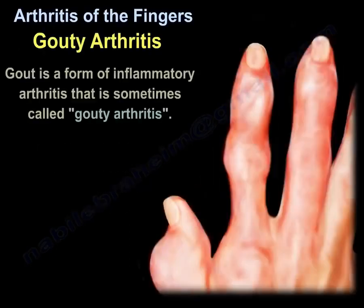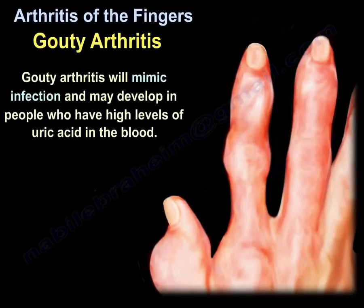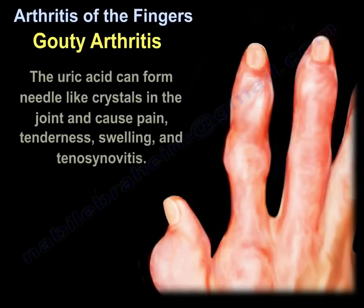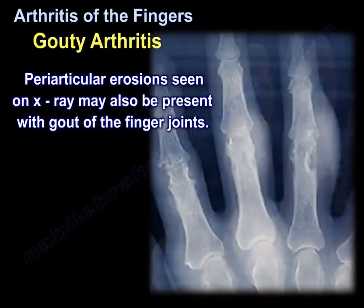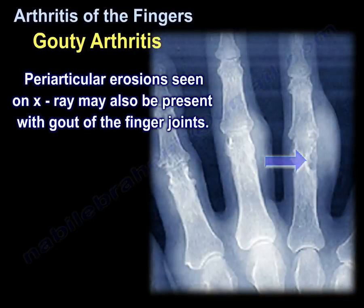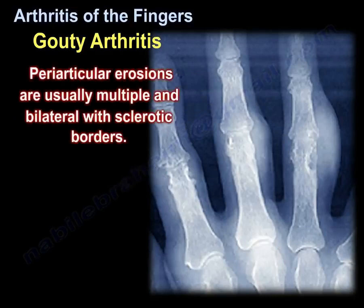Gouty arthritis: gout is a form of inflammatory arthritis that will mimic infection and may develop in people who have high levels of uric acid in the blood. The uric acid can form needle-like crystals in the joint and cause pain, tenderness, swelling, and tenosynovitis. Periarticular erosions seen on x-ray may also be present, and are usually multiple and bilateral with sclerotic borders.